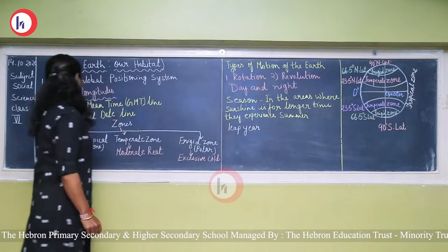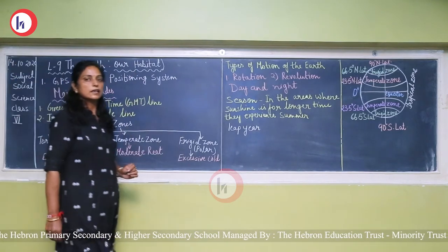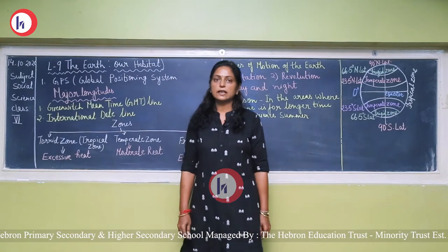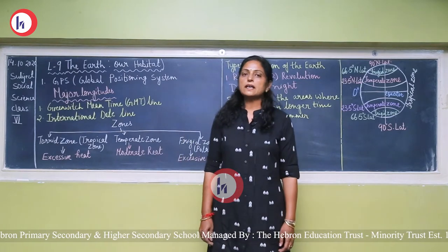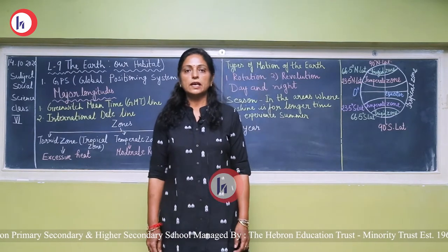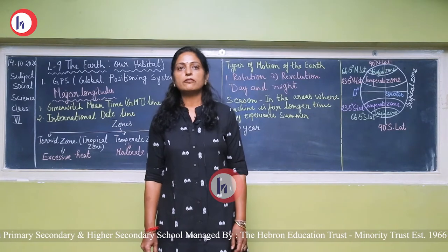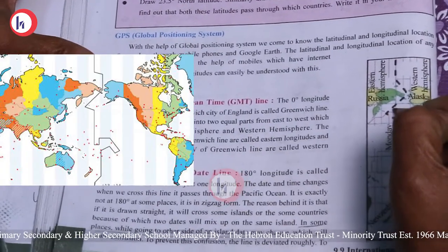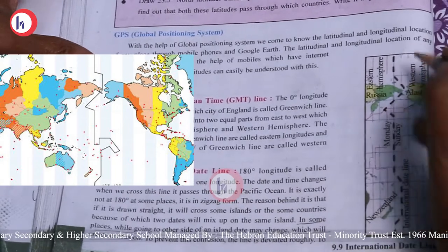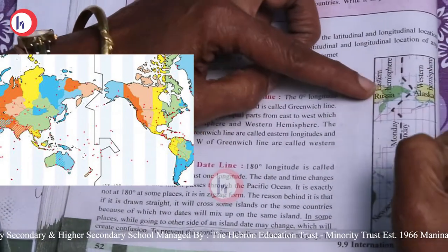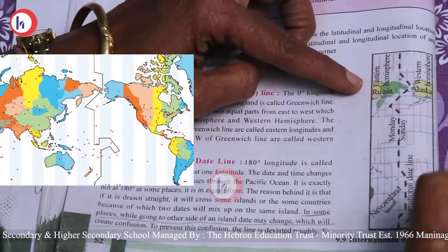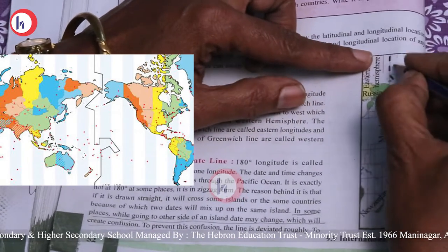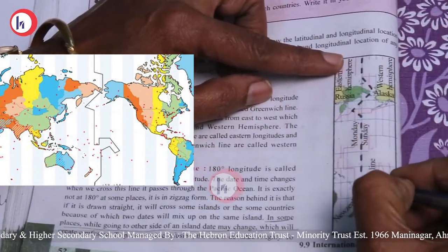The second major longitude is the International Date Line. The 180 degree longitude is called the International Date Line. It passes through the Pacific Ocean and is in a zigzag form.